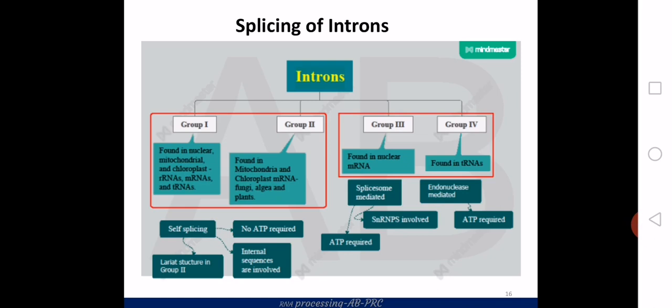Each group of introns has slight differences in their features, and different splicing mechanisms exist for each group. For group 1 and group 2, they perform a self-splicing mechanism without utilization of energy. Group 3 and group 4 require energy for their splicing process. Group 3 is the most commonly seen intron in mRNAs of most eukaryotic cells, and its splicing mechanism is called spliceosome-mediated splicing.